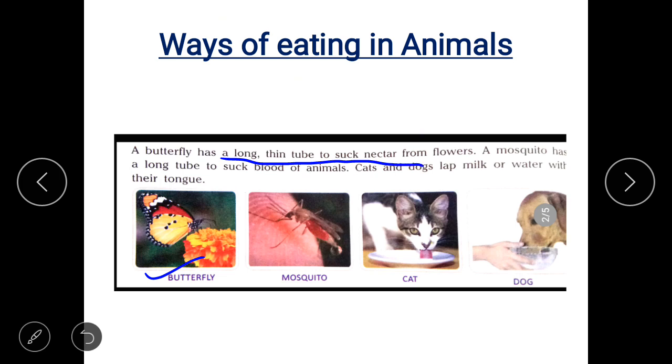A mosquito also has a long tube to suck blood of animals. Cats and dogs lap milk or water with their tongue.